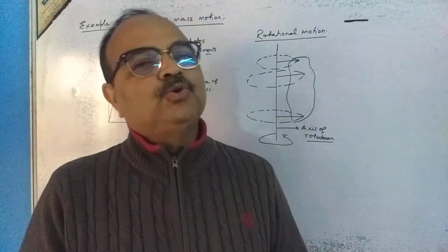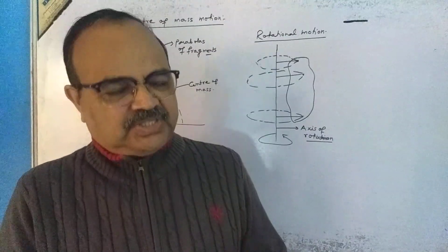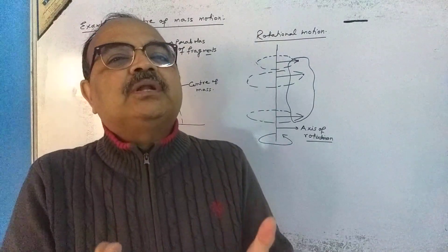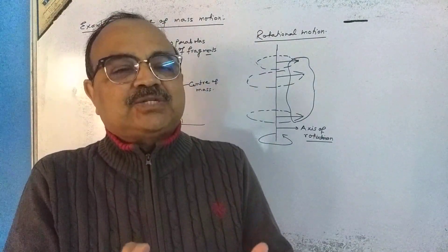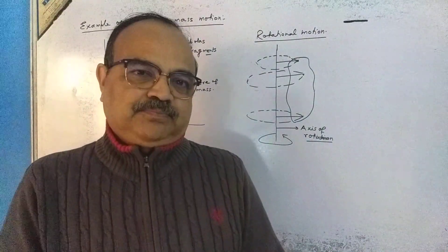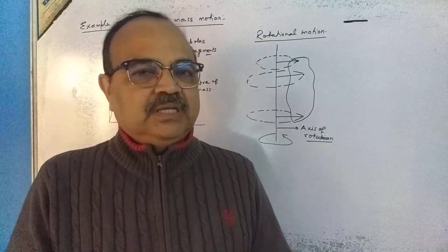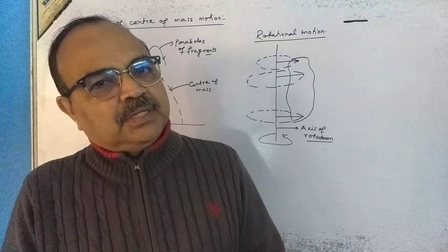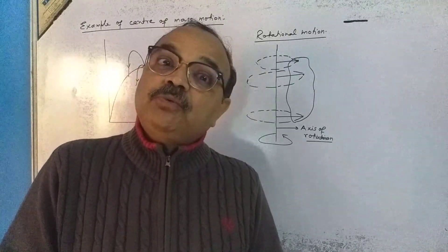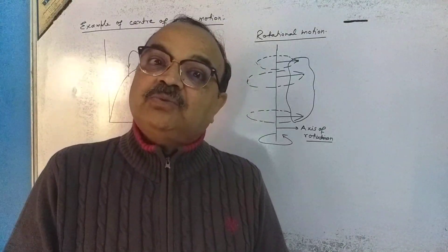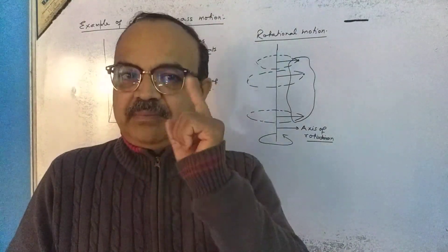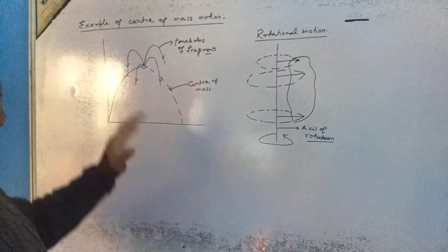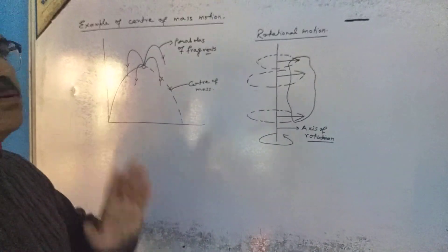If no external force acts on a system, then the velocity of the center of mass of the system will remain the same. This is a very good example of center of mass motion.